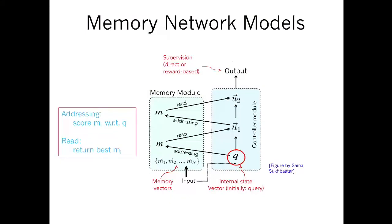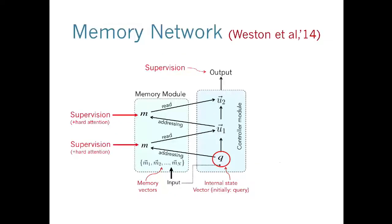Then there's a controller module that compares the query to each of the memories — this is called an addressing stage — and it will score them. That could be as simple as a dot product between the vectors. Then there's a reading stage that returns the result to the controller, like returning the best MI from the set compared to Q — either a hard or soft decision. Once you've read back those relevant memories, you can add that to the state of the controller and repeat the process. This idea of recurrently repeating the process is important for enabling some more complex reasoning.